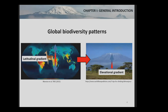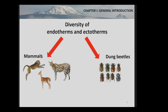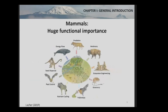Today I would like to take you along the elevation gradient of Mount Kilimanjaro. I was interested in ectothermic and endothermic diversity and how patterns and drivers may differ between those two groups. As endothermic organisms, I chose mammals, and as ectothermic organisms, I chose dung beetles. Those two groups may appear to be very dissimilar, yet they are closely functionally related because mammals produce dung, which is used as a food and nesting resource by dung beetles.